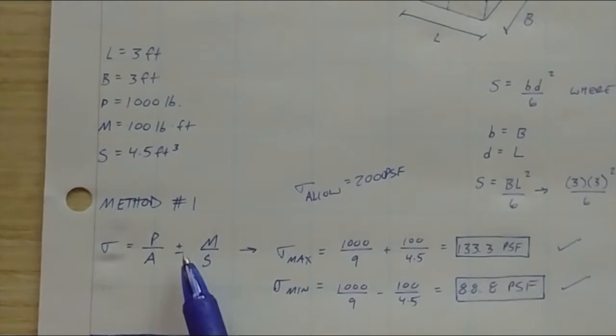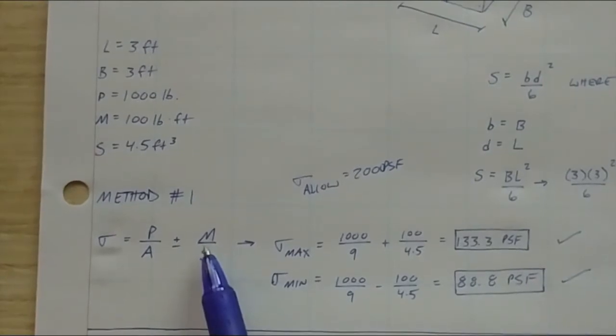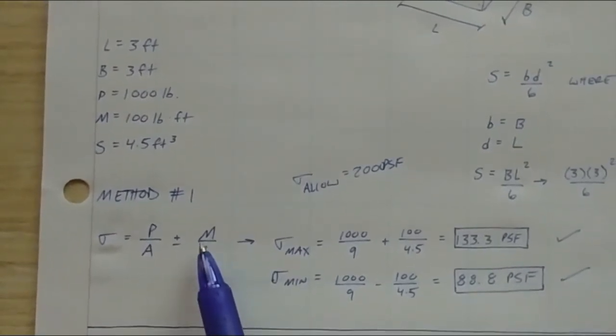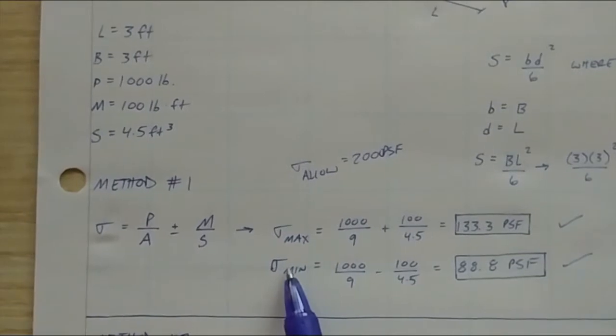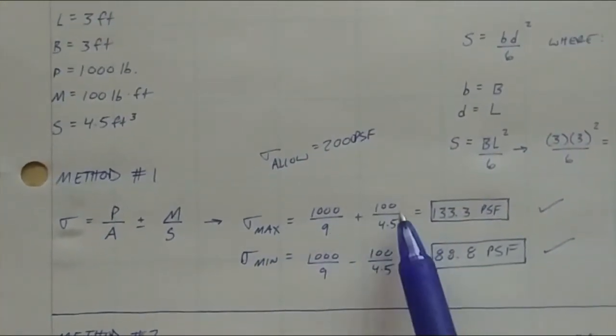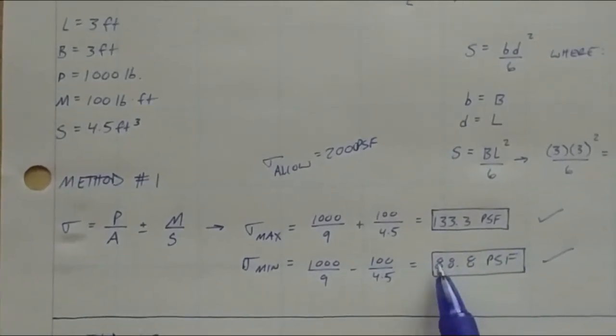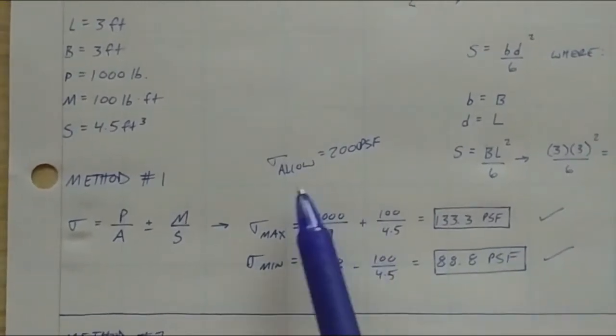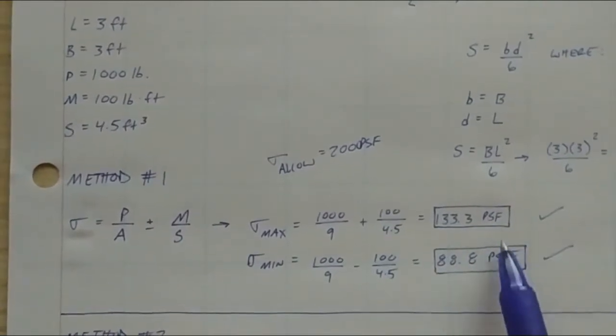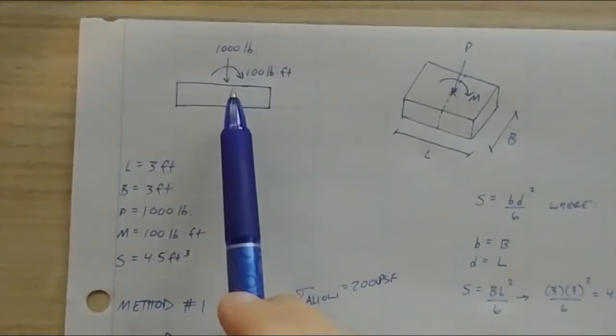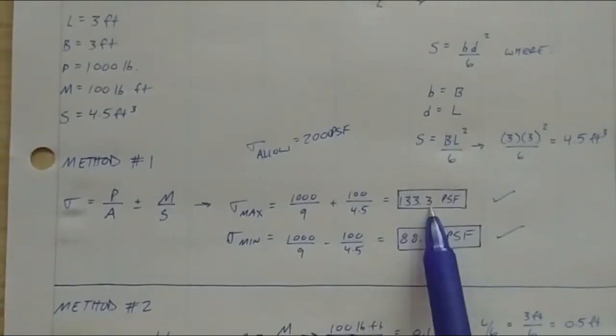The plus and minus in this equation denotes when you plus these two objects, or these two variables together, parts of the equation together, that gets you your maximum bearing pressure. And then when you use subtraction, it gets you your minimum bearing pressure. So when we break it up, as you see here, max gets you 133 PSF. And your minimum is 88.8 PSF. If we were to say that your allowable bearing pressure is 2000 PSF, we are well under those. So we are good to go. These are very light loads.